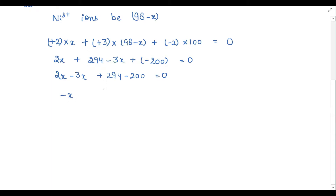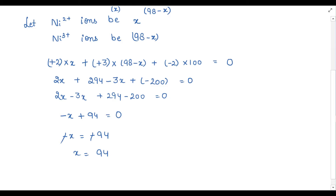जब 294 में से 200 minus किया तो 94 आया, equal to 0 आ गया। जब 94 दूसरी side लेके जाओगे तो minus X = −94, so X की value 94 है। हमने assume किया था कि Ni²⁺ ions = X, so Ni²⁺ = 94 आ गई। और Ni³⁺ ions = 98 − X = 98 − 94 = 4 ions आ गई।